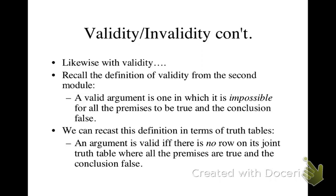If we fill in all the rows and figure out the truth values for all the statements at every row, and there is no row where all the premises are true and the conclusion is false, that shows that it's impossible for such a thing to happen. Because we've explored all of the possibilities and haven't found any such row.